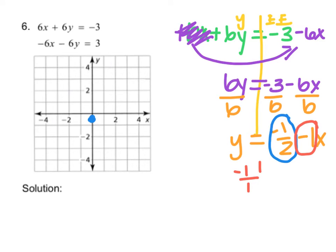The negative 1 tells me to go down, and the positive 1 tells me to go right. Starting from the y-intercept at negative one half, I take whole steps down and right repeatedly. I can also do the opposite — go up and left from the y-intercept, going up a whole step and over a whole step. Those are where my points are going to be.